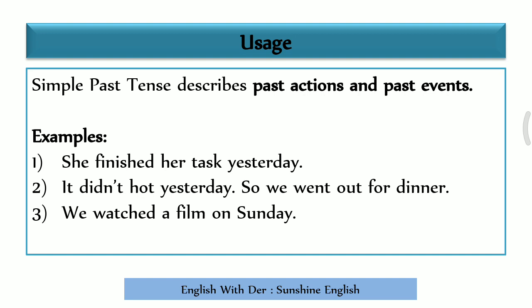Here are some examples. 'She finished her task yesterday.' Yesterday is a past event — she finished her task. 'It didn't rain yesterday, so we went out for dinner.' These describe past actions using simple past tense.